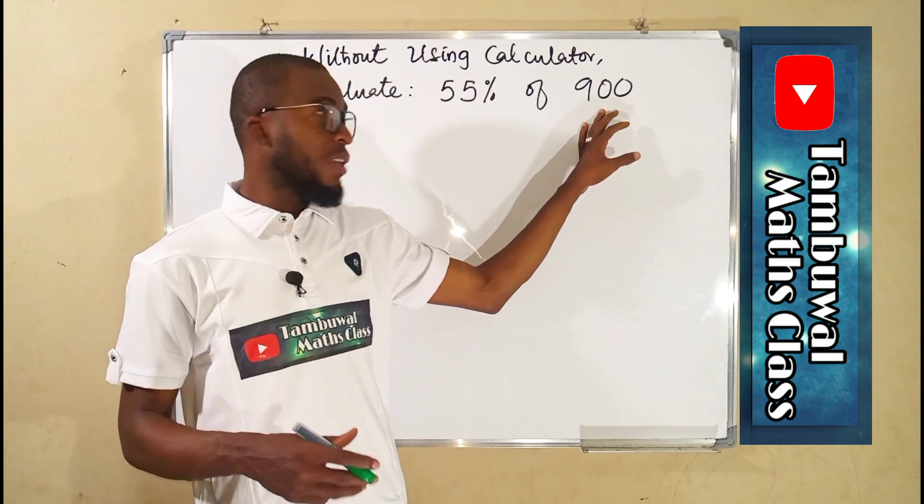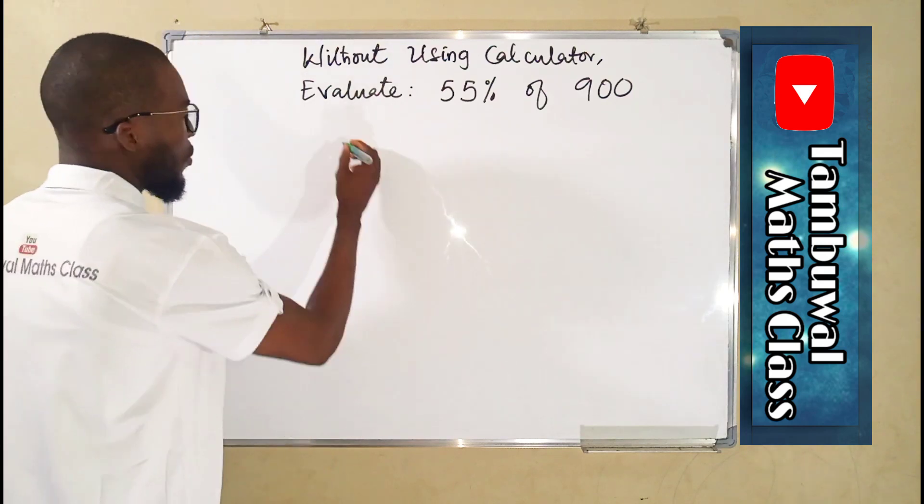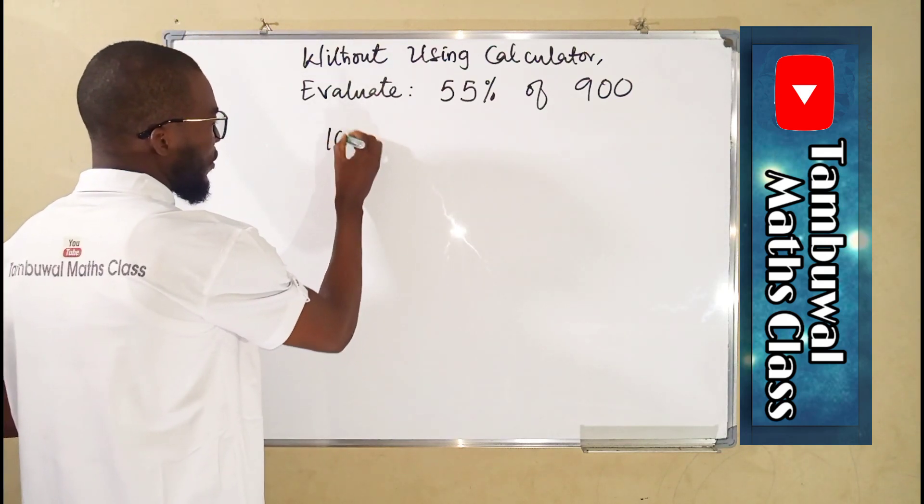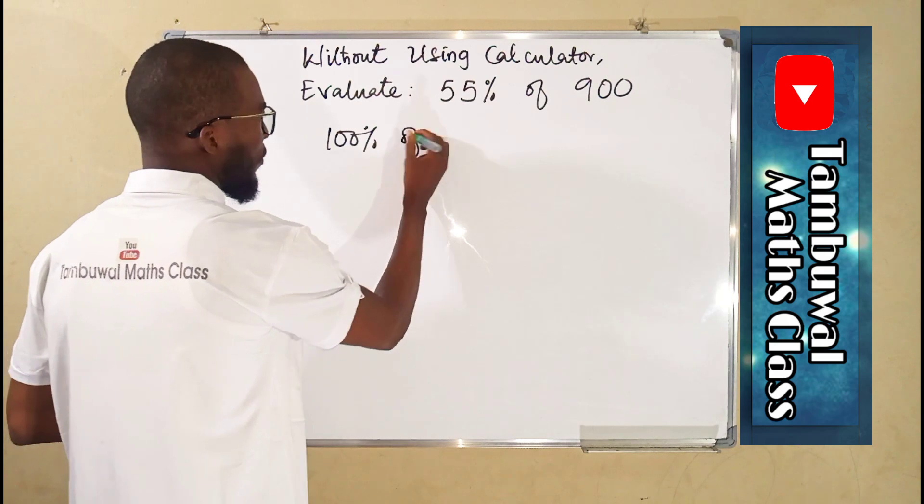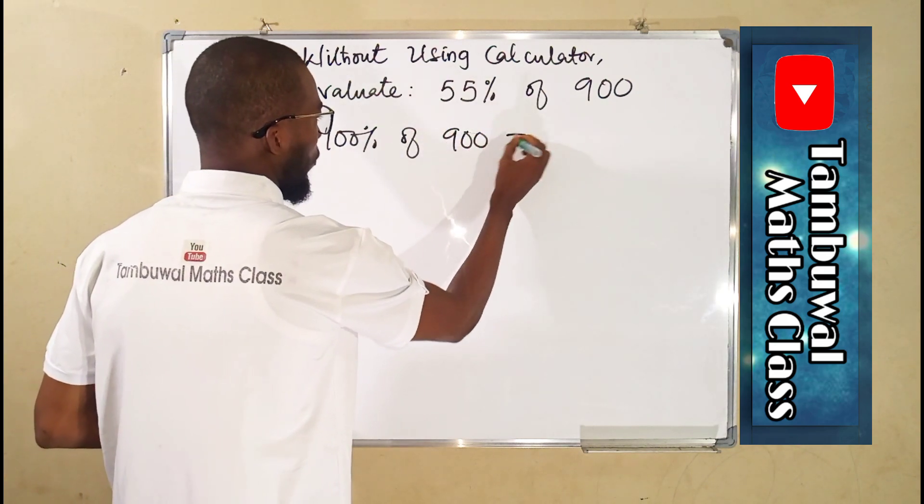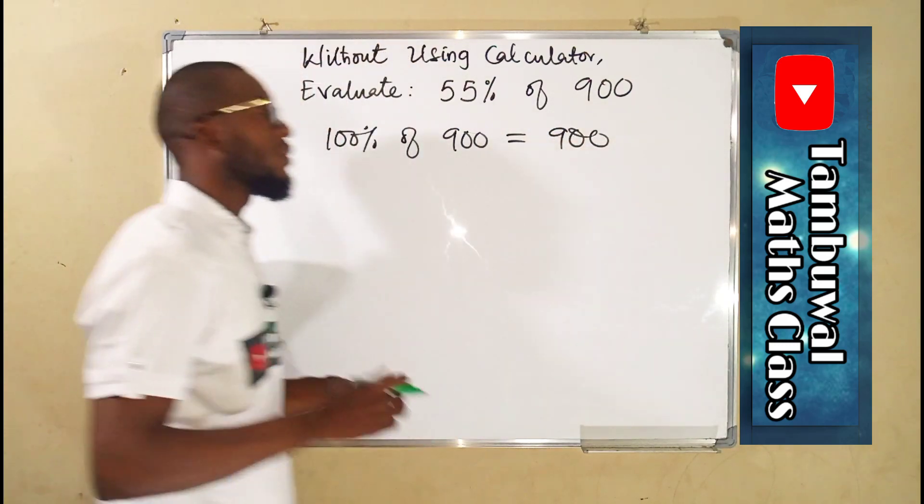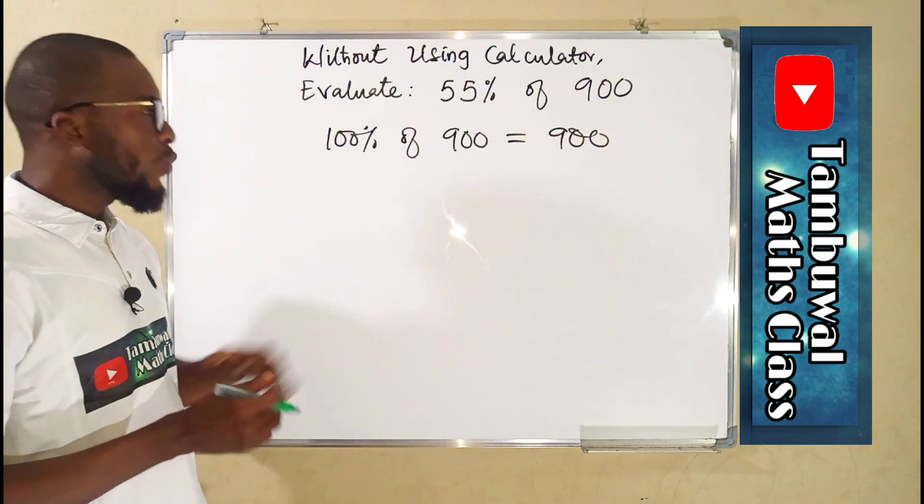Any number in its original form is always 100%. So 100% of 900 will still be 900.